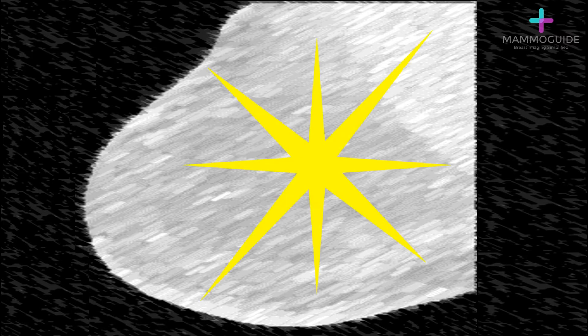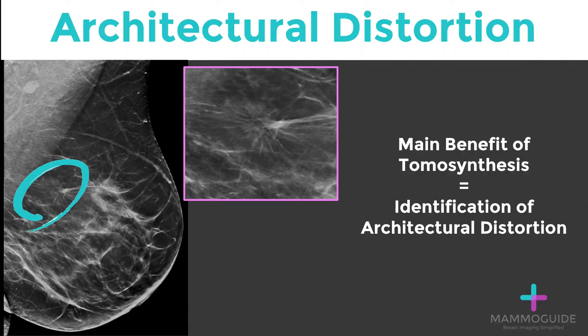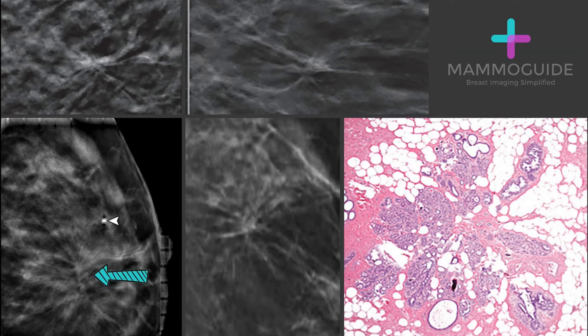Architectural distortion is when lines radiate to a central point. A variant form of architectural distortion is spiculation, and this term is used when there is architectural distortion associated with a mass. Architectural distortion is becoming a bigger part of screening mammography now with the introduction of tomosynthesis, or 3D mammography. The main benefit of tomosynthesis is identification of subtle architectural distortion. Every architectural distortion looks more or less the same — these lines radiating to a central point — and even under the microscope, you can see these ducts radiating towards a central point.